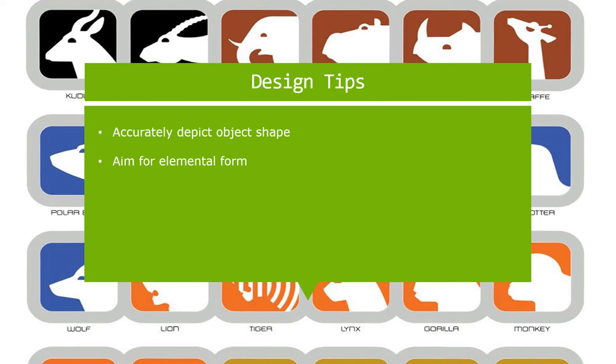Design tip two: aim for elemental form. Economy of form trumps intricacy or complexity. Details and any excessive information are going to confuse the user, especially at a smaller size.